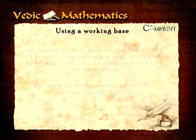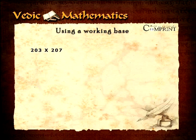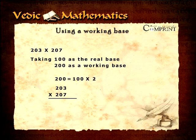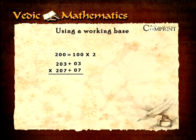In the given example, 203 multiplied by 207, taking 100 as a real base and 200 as a working base, the sum is set out with 200, which equals 100 multiplied by 2, set out as above. The surplus amounts are put down on the right in the usual fashion, and these are multiplied together to give the right hand part of the answer, that is 3 multiplied by 7 equals 21. The left hand part of the answer is then found by cross addition, that is 207 plus 3 which equals 210.